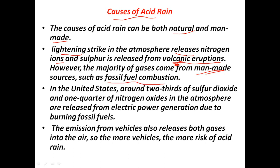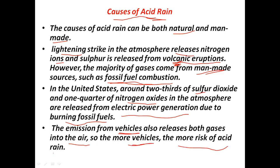However, the majority of these gases are released from manmade sources. Fossil fuel combustion in thermal power plants and industries releases sulphur dioxide into the atmosphere. In the United States, around two-thirds of sulphur dioxide and one quarter of nitrogen oxides are released from electric power generation. Vehicle emissions also release nitrogen oxides into the atmosphere, which leads to the formation of nitric acid. The more vehicles we have, the greater the risk of acid rain.